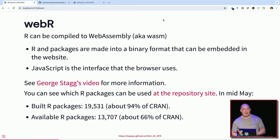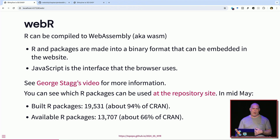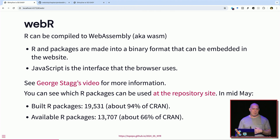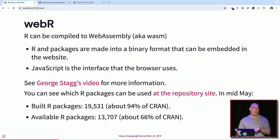Then along came WebR — it just seems like magic to me. Something called WebAssembly was built a while ago; Python was eventually built inside WebAssembly, and now we have it with R. WebAssembly builds R into a binary format you can access in JavaScript, built to be used on the web and in the browser. Posit hired George Stagg, who was doing a lot of this work on his own, to develop WebR more extensively. This link to a video is really good if you want to learn more.